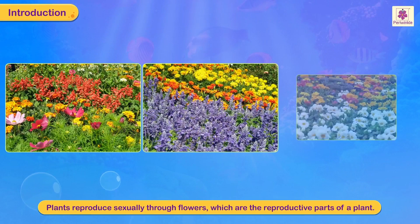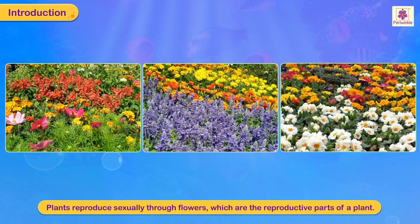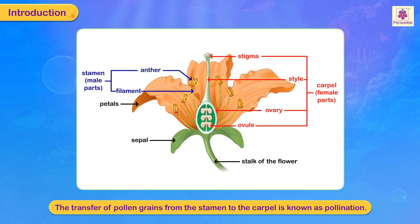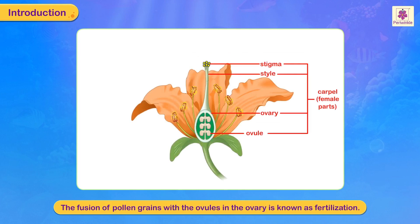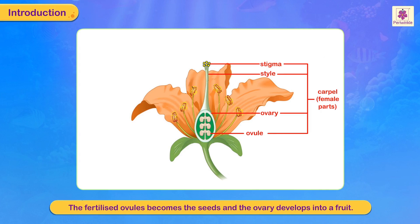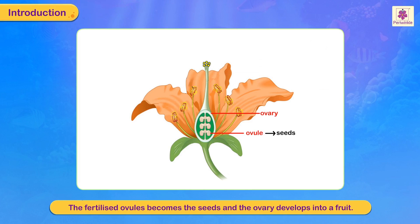Plants reproduce sexually through flowers, which are the reproductive parts of a plant. The pollen grains produced by the anther of the stamen are transferred to the stigma of the female part, that is the carpel of the flower. This process is called pollination. After pollination, the pollen grains move towards the ovary and fuse with the ovules. This process is called fertilization. The fertilized ovules become the seeds and the ovary develops into a fruit.